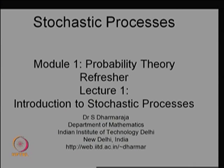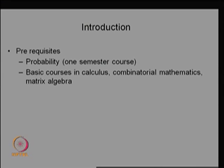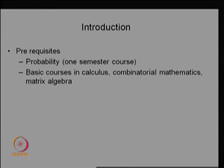Our lecture is Stochastic Processes. This course needs a prerequisite of probability as a full one semester course. Most universities have a course in probability theory along with stochastic processes, or random processes, or probability and statistics. At least some 30 lectures of probability theory are needed for this stochastic process course as a prerequisite.